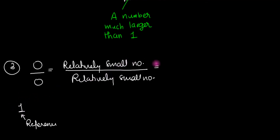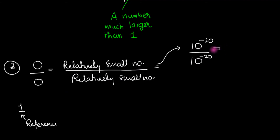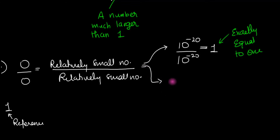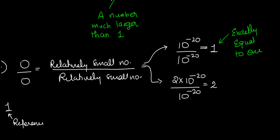Let's take some examples. Choose the numerator as 10 to the minus 20 — that's much smaller than 1 — and divide by 10 to the minus 20, which is also much smaller than 1. The answer is just 1. But that's not the only answer. Take 2 times 10 to the minus 20 divided by 10 to the minus 20 — this time we get 2, which is comparable to 1.